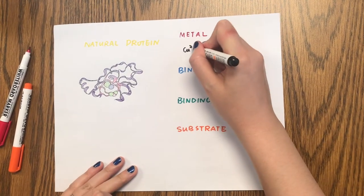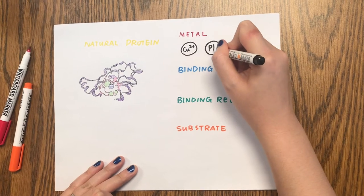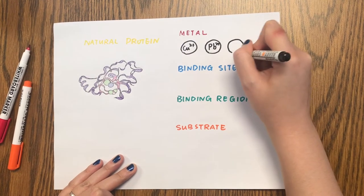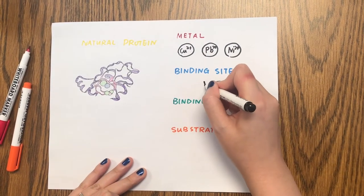According to that, we designed our polymer in four parts. Target metals can be nickel, lead, and copper.